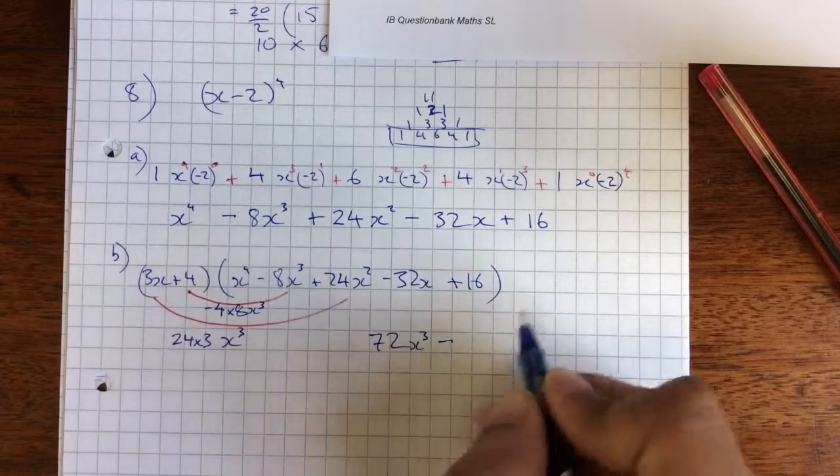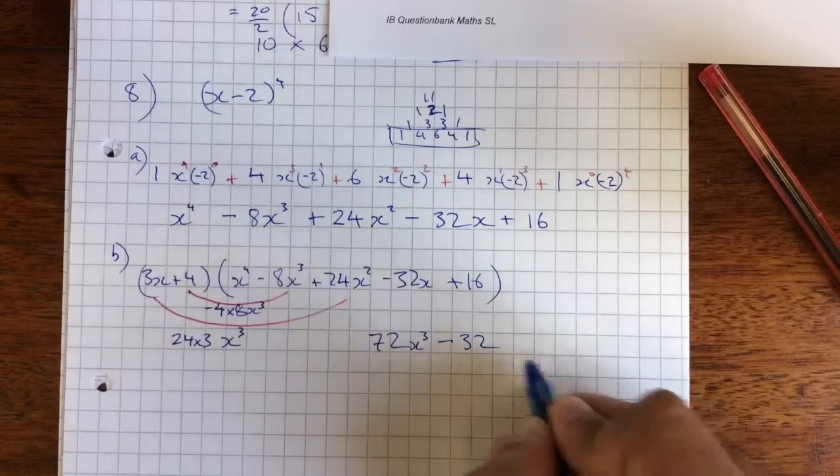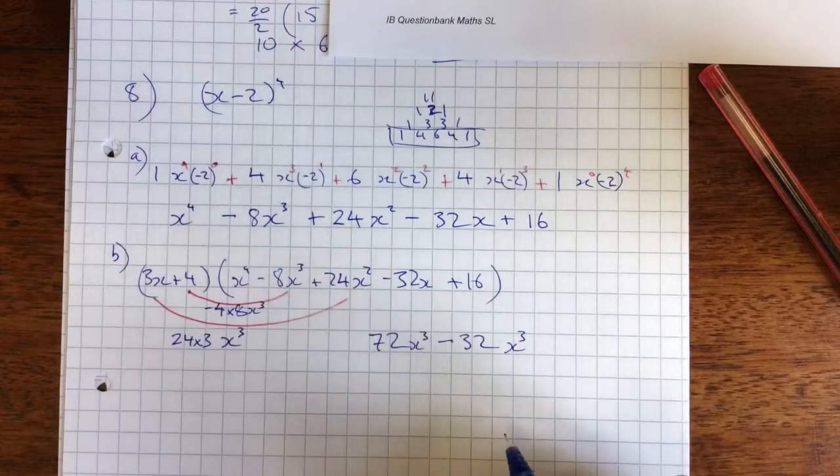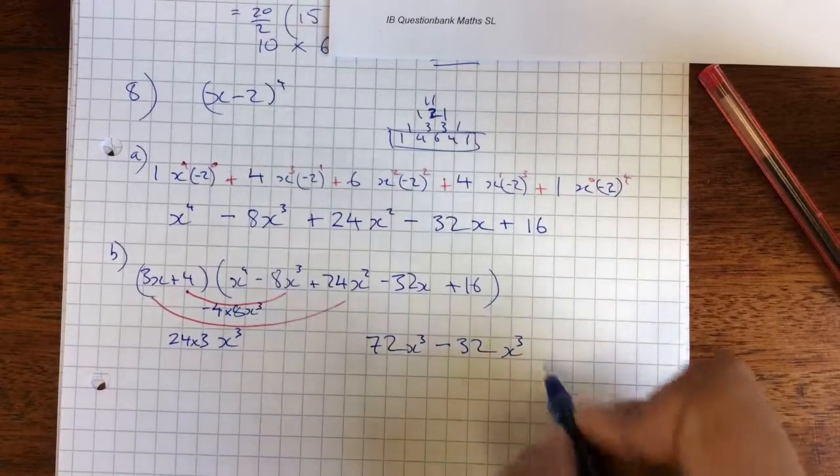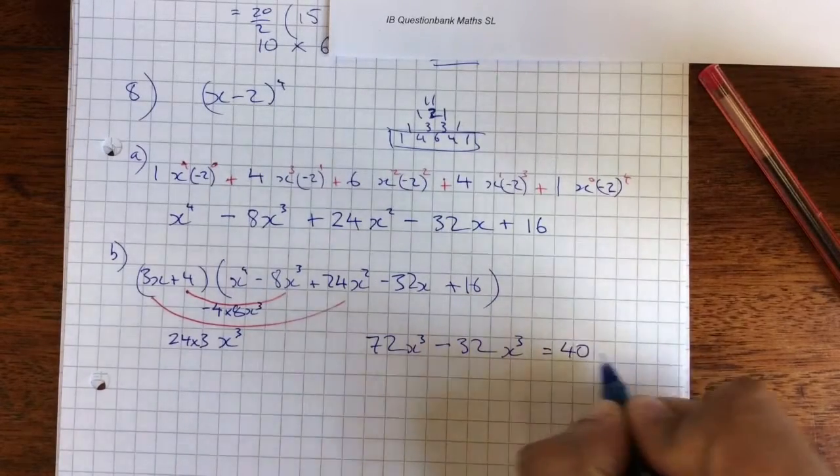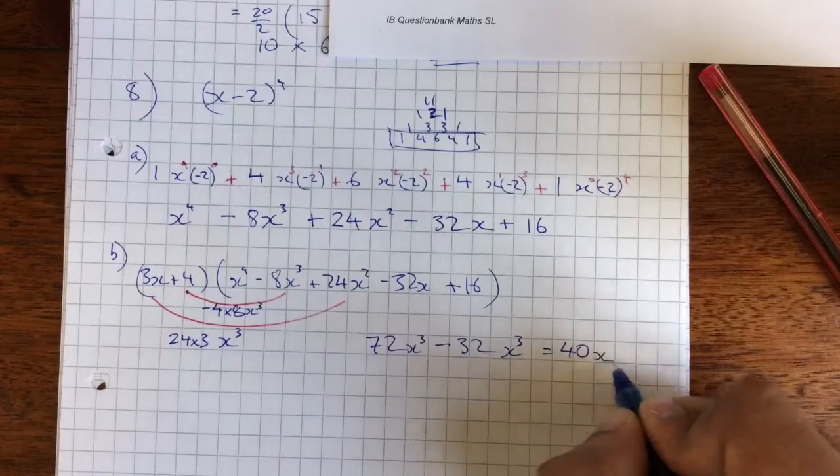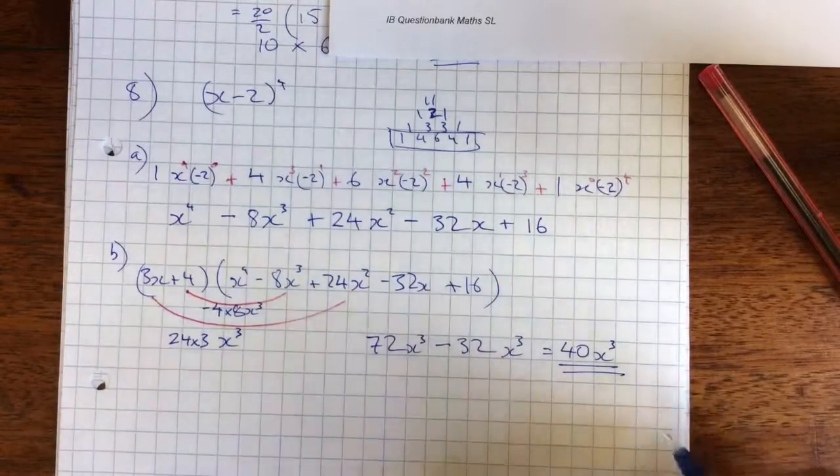And then there's a minus here. Minus 4 times 8, 32x³. And so 72 minus 32 is 70, 40 equals 40x³. Done.